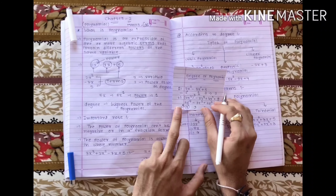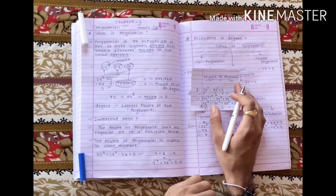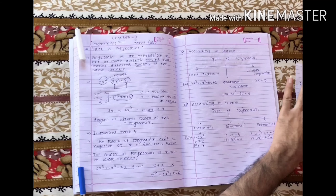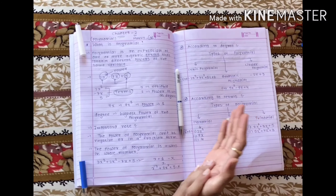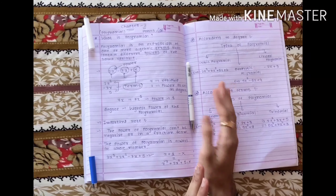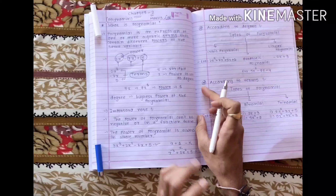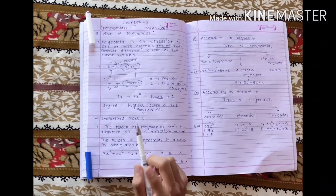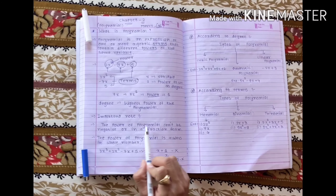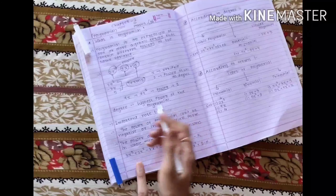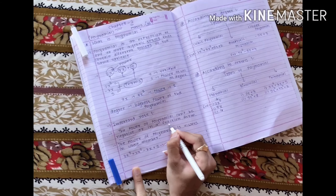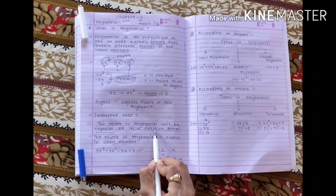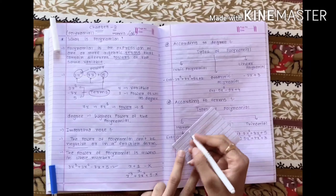I hope you all have understood about the degree of polynomial. Now we are starting with one more condition: whether the given expression is a polynomial or not. There is one rule — just like everywhere has rules and regulations, polynomial has a rule too.